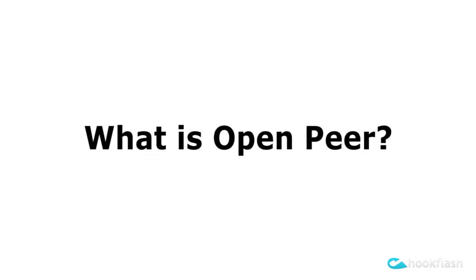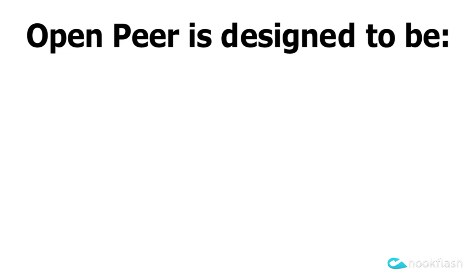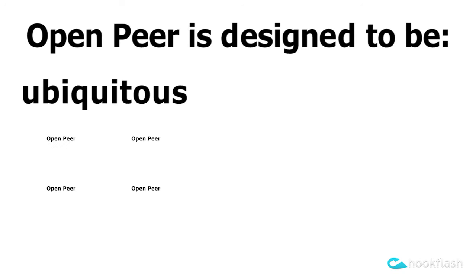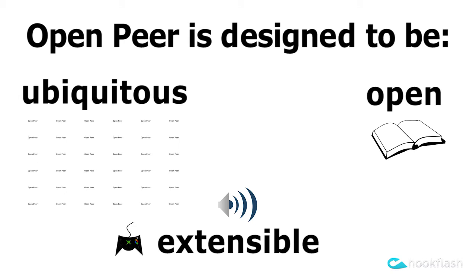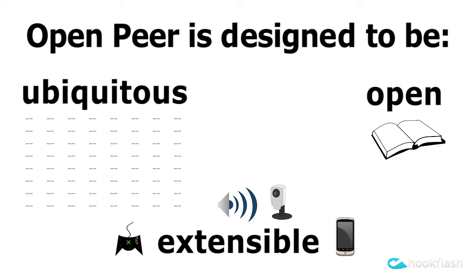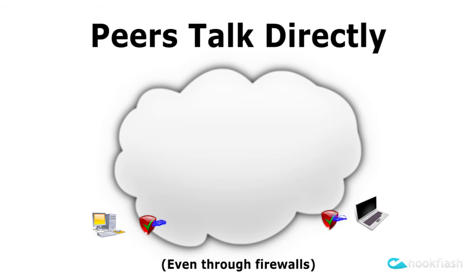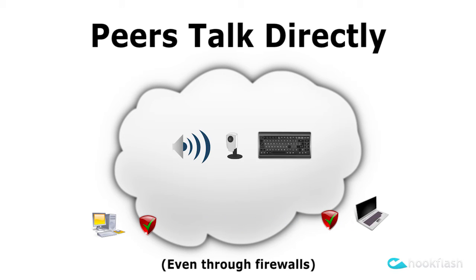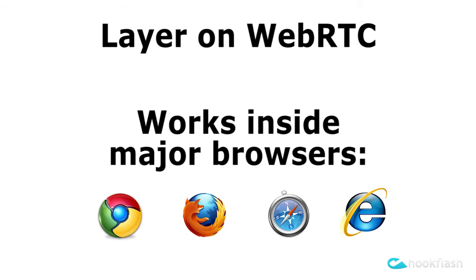So what is OpenPeer? OpenPeer is designed to be a ubiquitous, open, extensible peer-to-peer communication enabling protocol, allowing peers to communicate easily and directly. This is especially useful to power service offerings like audio and video calling, texting, picture, or file exchange, but certainly the uses don't stop there. The protocol was designed specifically to be a natural layer upon WebRTC.